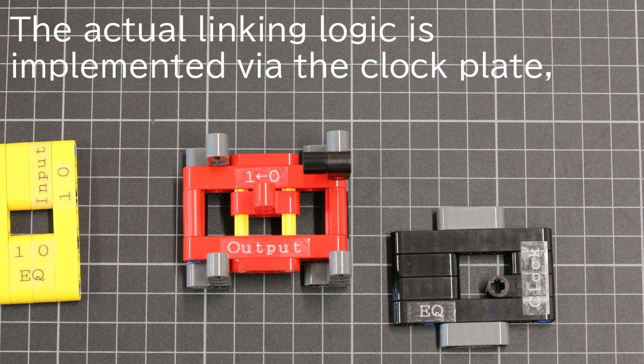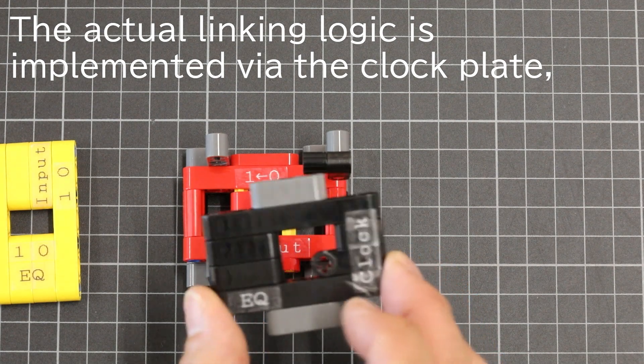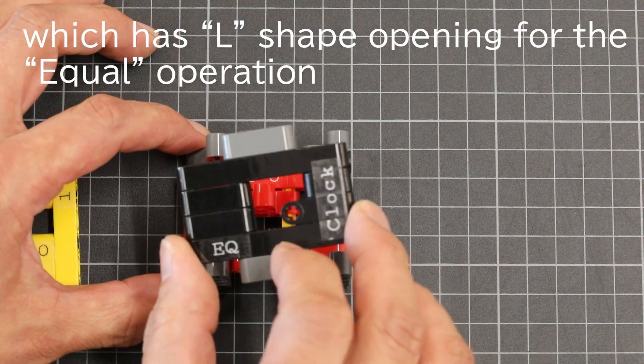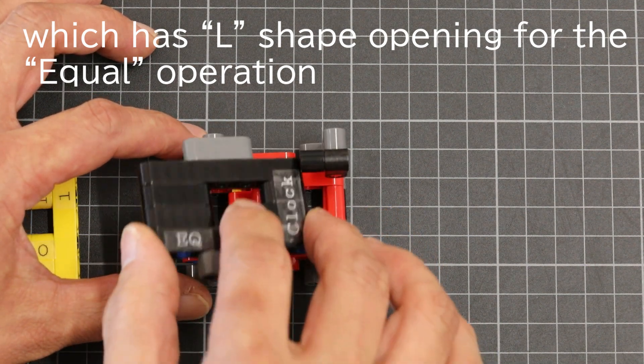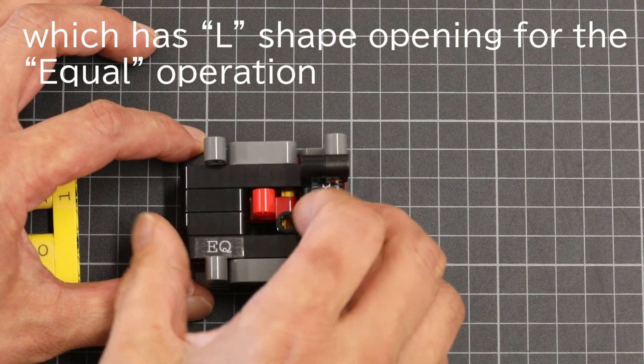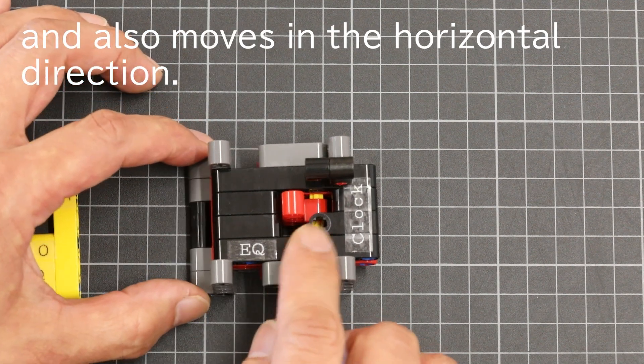The actual linking logic is implemented via the clock plate, which has an L-shaped opening. And the equal operation also moves in horizontal direction.